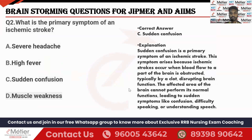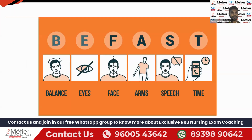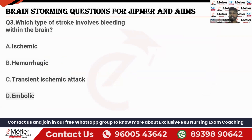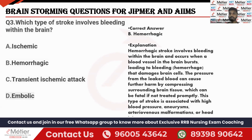As soon as possible we have to call the ambulance and take the patient to a medical specialty to treat the stroke. Next question: Which type of stroke involves bleeding within the brain? Options: ischemic, hemorrhagic, transient ischemic attack, or embolic. The bleeding within the brain is hemorrhagic.